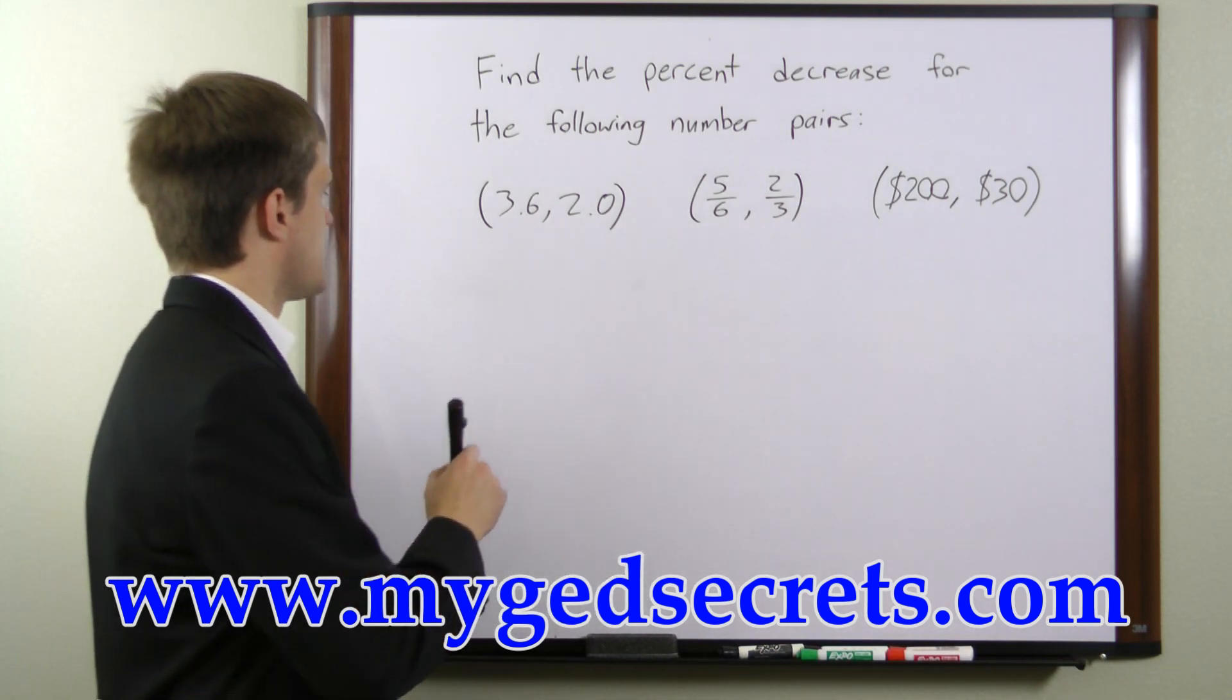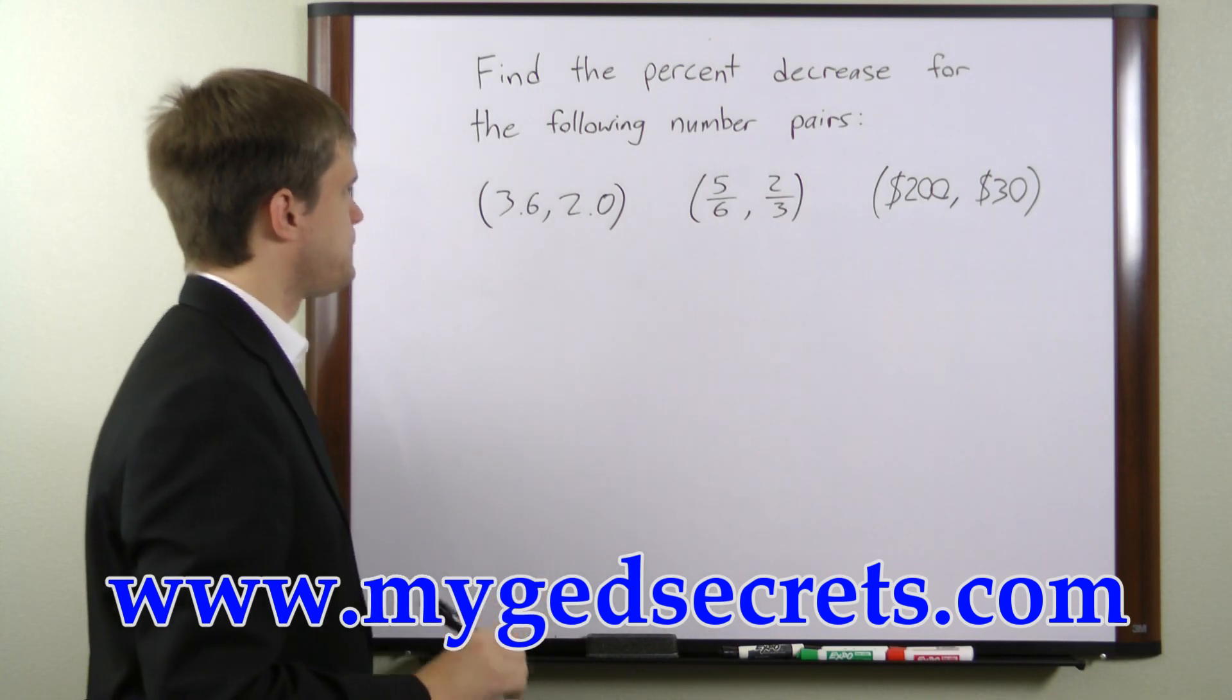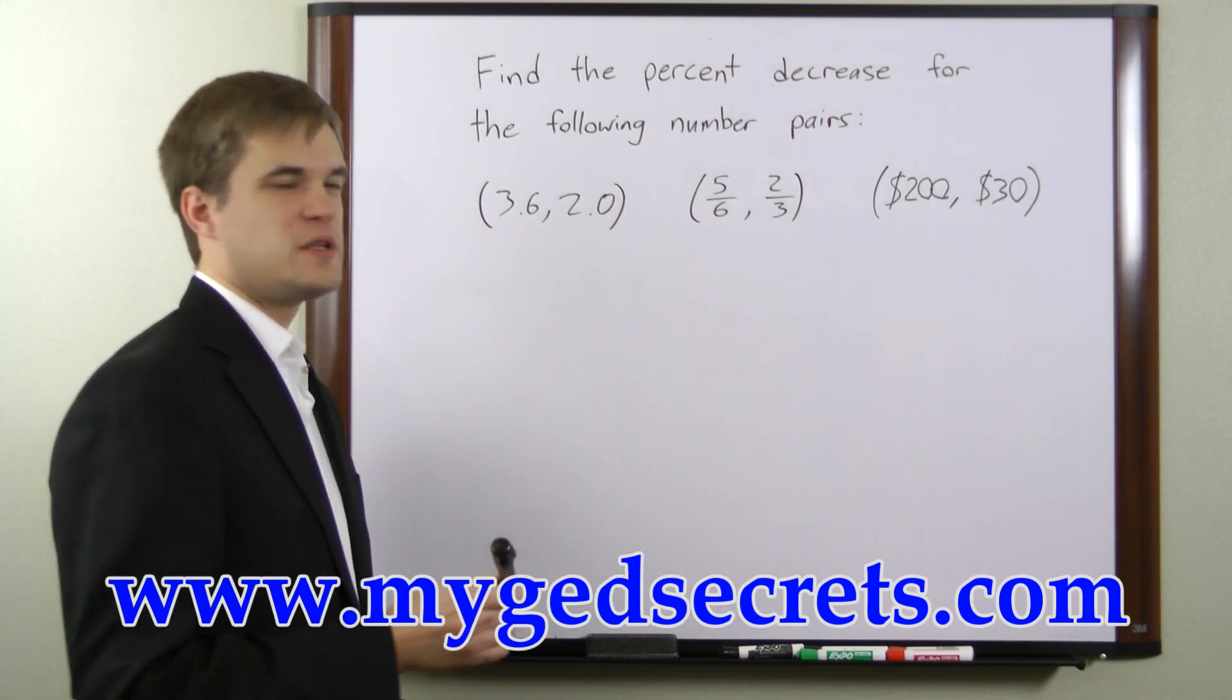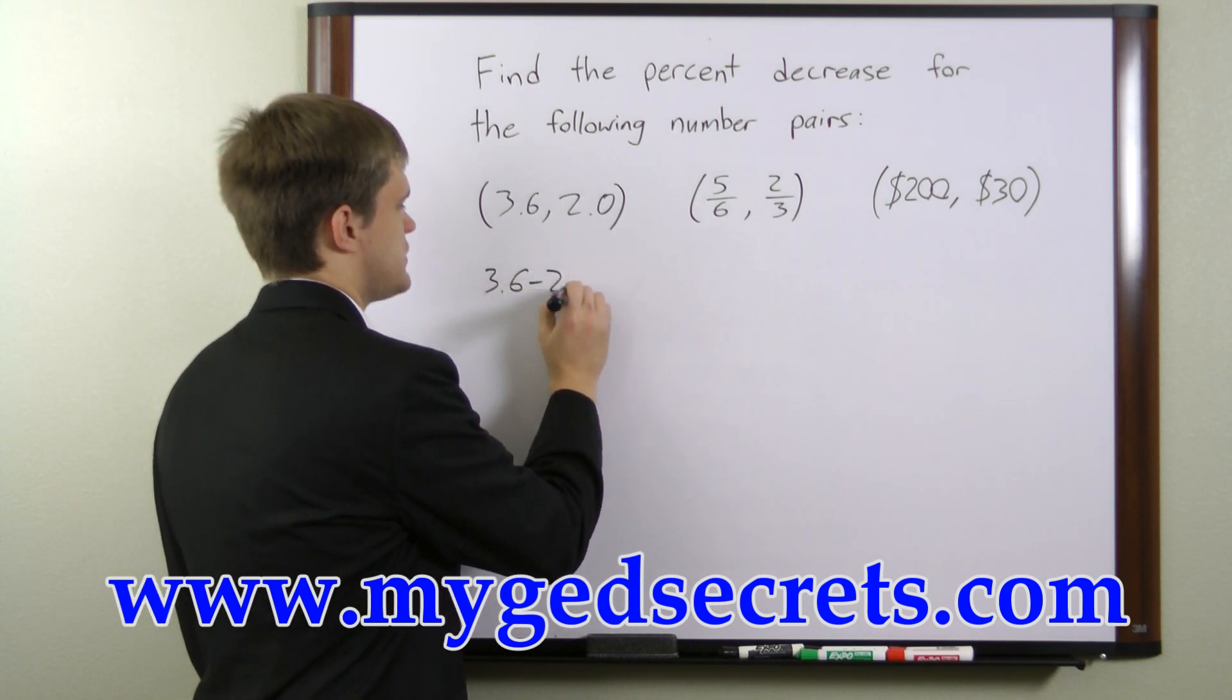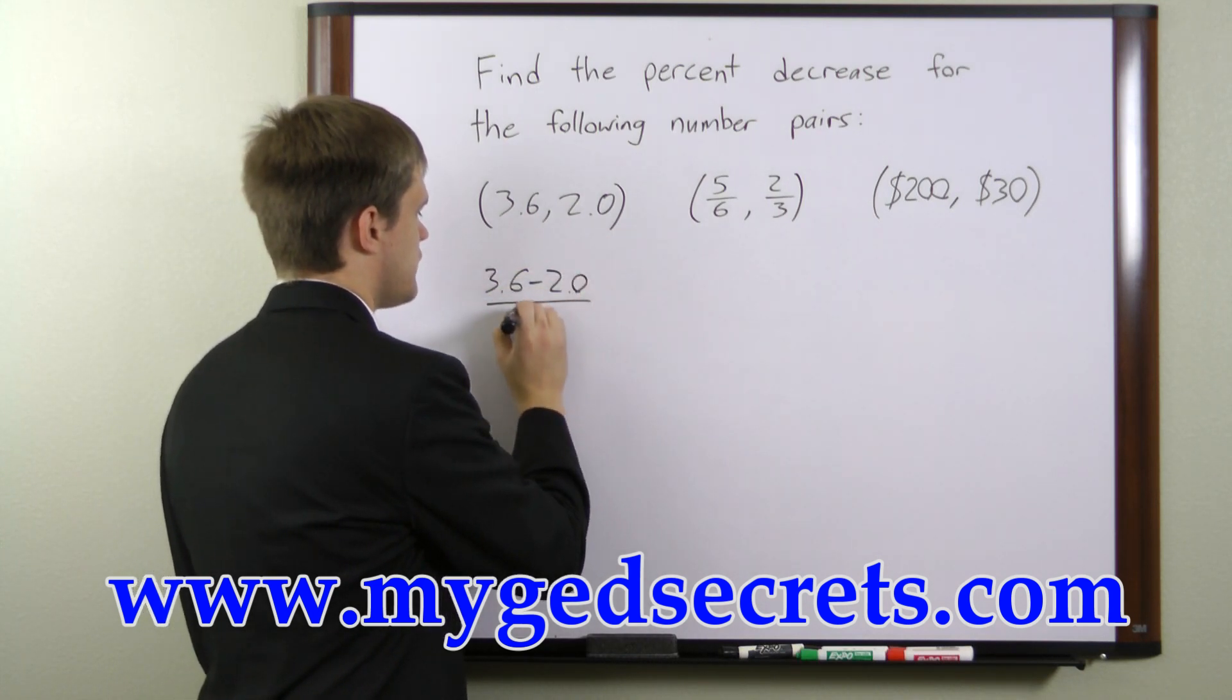In the first example we have 3.6 and 2.0. To find percent decrease we'll take the first number, subtract the second number, and divide by the first number.